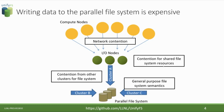Another reason parallel file systems can have slower performance is they support what is called general-purpose file system semantics. This means the parallel file system protects your data from just about any kind of I/O operation that could happen at any time. If process zero and process 100 both want to access the same region of a file simultaneously, the parallel file system guarantees a consistent result. Nobody wants corrupted data. However, this protection isn't always strictly necessary for HPC applications, and the locking required to support these protections can be expensive.